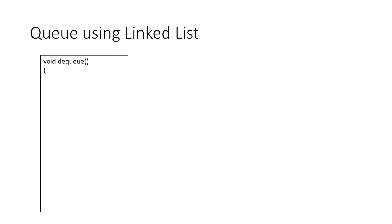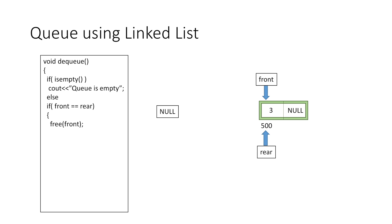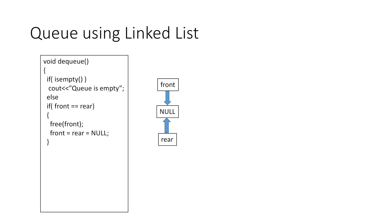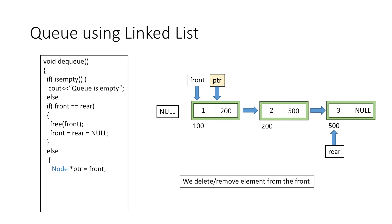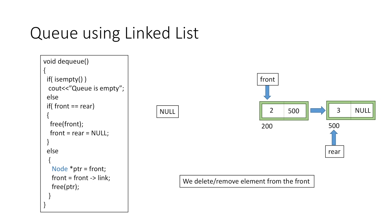For the dequeue function, we first check if the queue is empty and print a message if so. Otherwise, if front is equal to rear there is only one element, so we free that node's memory and set both front and rear to null. If there are more than one element, we set ptr equal to front, move front to the next node by making front equal to front's link part — so front now points to the second node — then free the memory of the node pointed by ptr. Dequeue is complete.